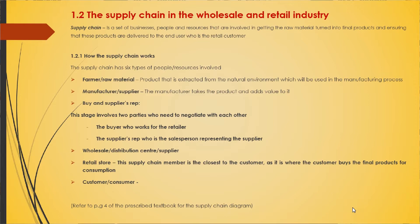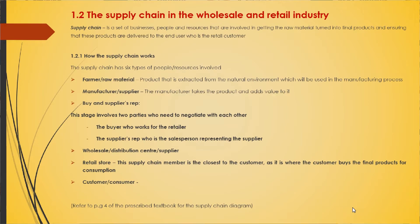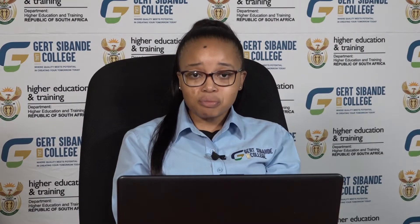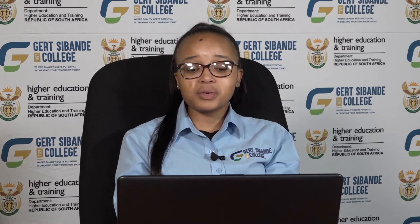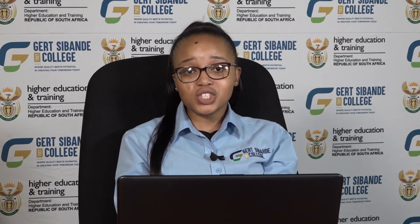We looked at how the supply chain works and the six different types of people, resources, or businesses involved: farmer or raw materials, manufacturer or supplier, buyer and supplier's rep, wholesaler, distribution center, retail store, and the customer. Please also remember to refer to page four of your prescribed textbook for the supply chain diagram.